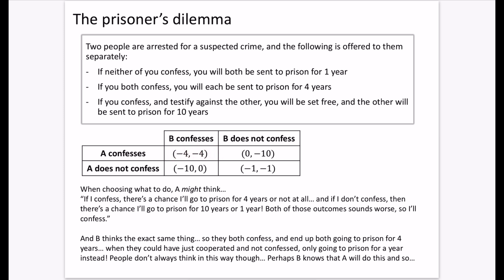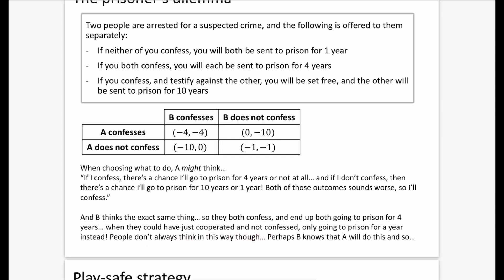B thinks the exact same thing, so they both confess and end up in prison for four years each — when they could have cooperated and only gone to prison for one year each. Both players' logic says 'confessing is better in both scenarios,' so they confess. But clearly there was a better outcome for both of them: not confessing would have meant just one year each instead of four.